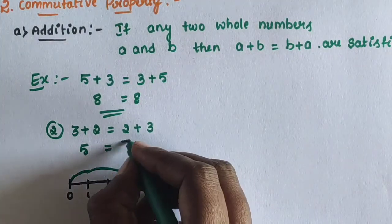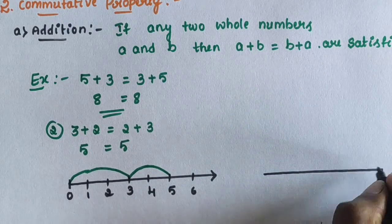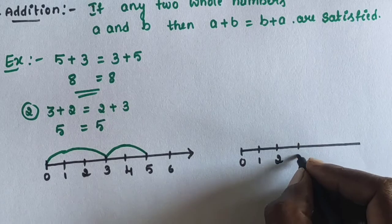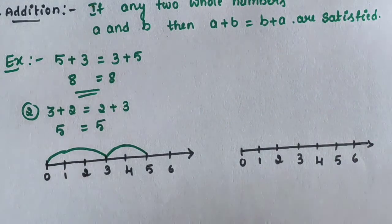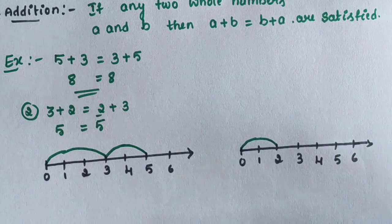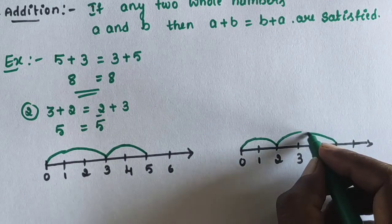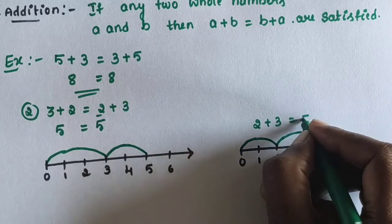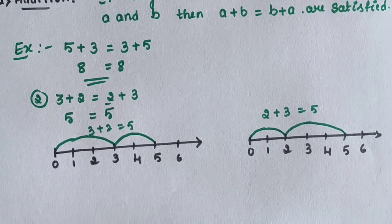Next, 2 plus 3 is equal to 5. On the number line: 0, 1, 2, 3, 4, 5, 6. First join 0 to 2, then add 3 more: 1, 2, 3, reaching 5. So 2 plus 3 equals 5. Since 3 plus 2 equals 5 and 2 plus 3 equals 5, the commutative property for addition is satisfied.